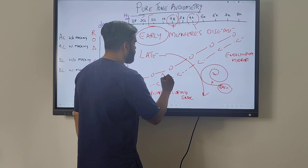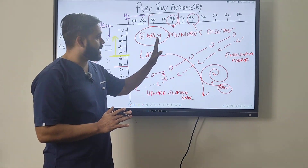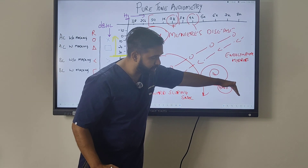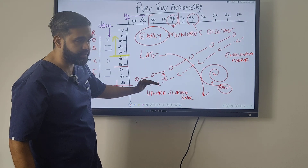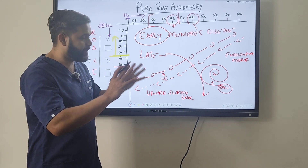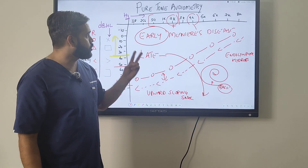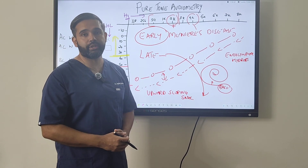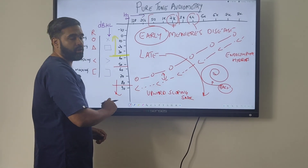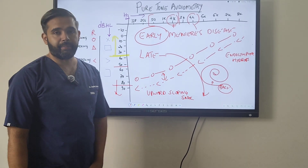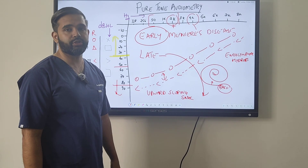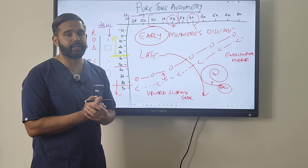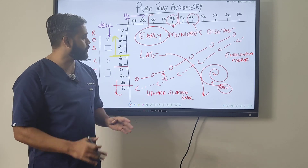Summary: Normal hearing has air and bone conduction together with air bone gap less than 20 decibels. Conductive hearing loss has air bone gap more than 20 decibels with bone conduction better. Sensorineural hearing loss shows a sloping dip with air bone gap less than 20 decibels. Mixed hearing loss shows both components, as in cholesteatoma. 2k bone conduction dip is Carhart's notch in otosclerosis; 4k dip in both is noise-induced hearing loss; upward sloping is early Meniere's; downward sloping is presbycusis. One or two questions come from this in theory, MCQs, and vivas.